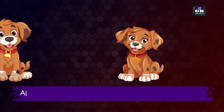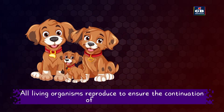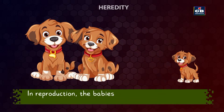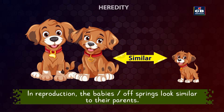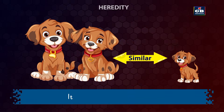Heredity. All living organisms reproduce to ensure the continuation of their species. In reproduction, the babies or offsprings look similar to their parents. Do you know why? It is because of inheritance.